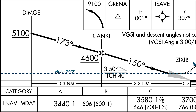On a precision approach with a decision altitude, this is perfectly fine, but you can't go below the minimum descent altitude for any reason unless you're continuing the approach down to the runway.